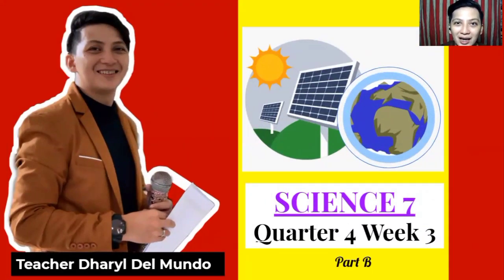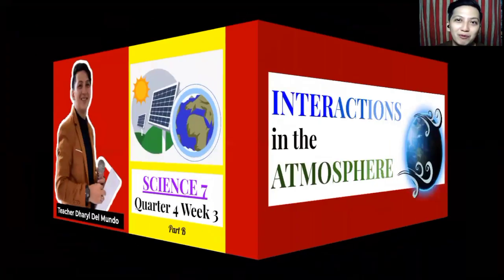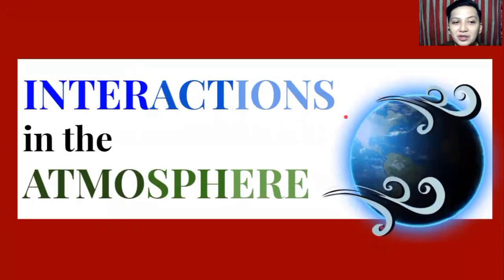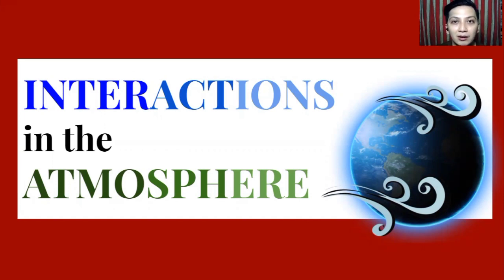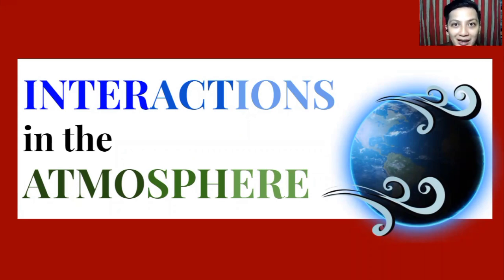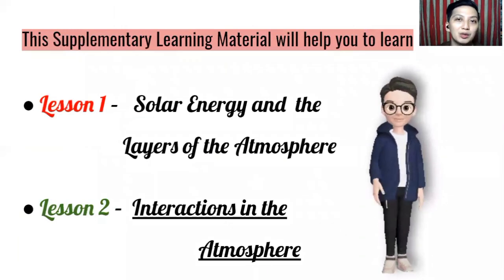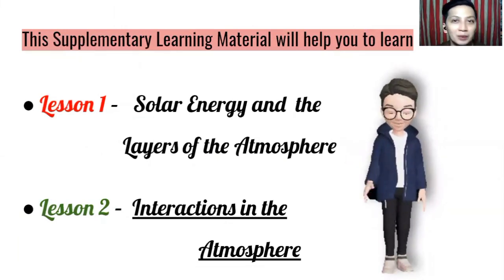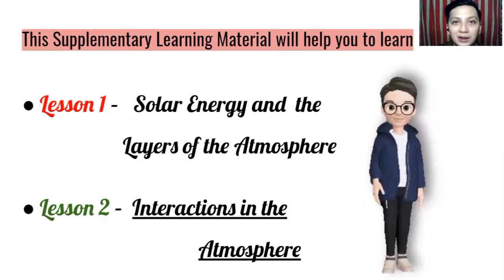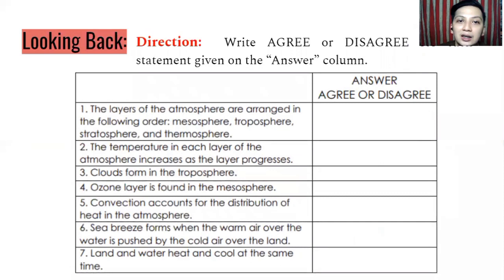So we are going to proceed on our lesson number two of quarter four, week number three, which is all about interactions in the atmosphere. Last time we talked about solar energy and layers of the atmosphere — how they interact and what things are related from one to another. On this part, all the things that happen in the atmosphere are going to be exciting, because we are going to deal with different interactions that happen in the atmosphere.